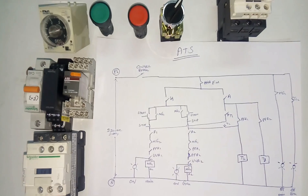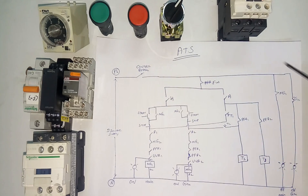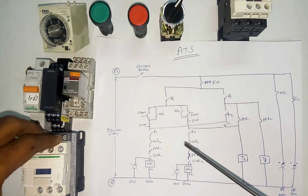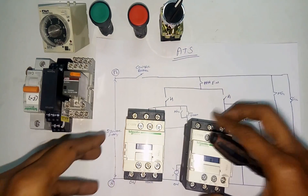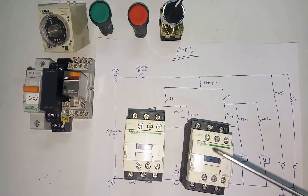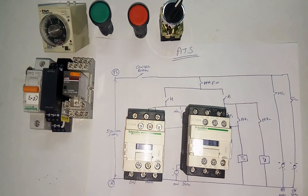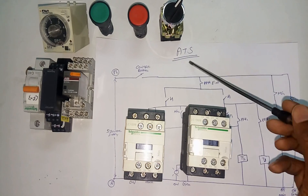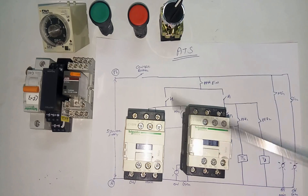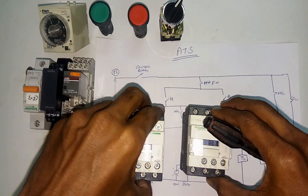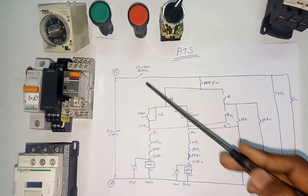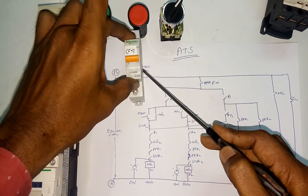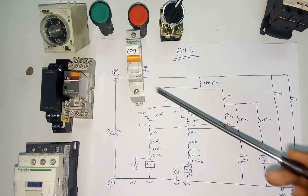We can use the ATS to use a control diagram. For starting, you will have two connectors, so you will have two supplies automatically. For MCCB, you will have two connectors. First, you will have a control — the control power supply we have already arranged in common power supply. We can use a control breaker or a 6A breaker.